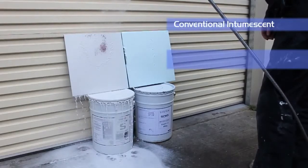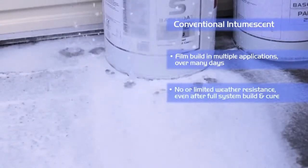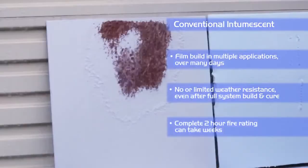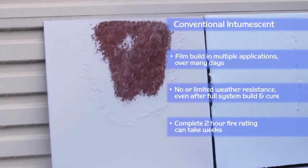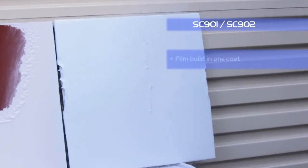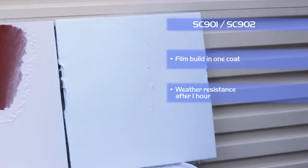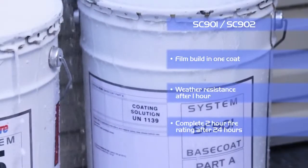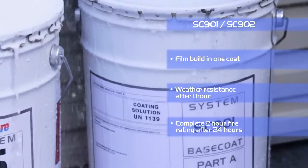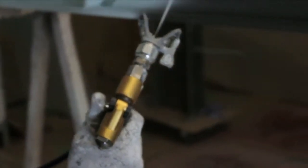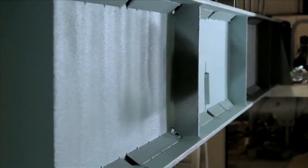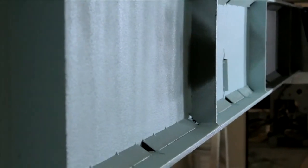Conventional intumescence have limited resistance to environmental conditions during the construction phase and can be easily washed off. The off-site SC901 system is touch dry, weather resistant and over-coatable within 60 minutes. Where required a top seal can be applied the same day and can be transported within 8 hours of coating. The on-site SC902 system is also touch dry and weather resistant within 60 minutes with the top seal being able to be applied the following day.